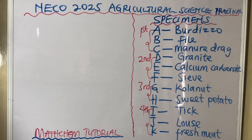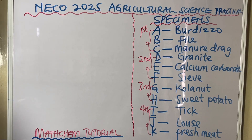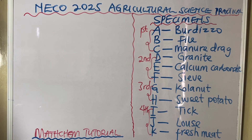Specimen B is a file. Everyone knows a file — it is used to sharpen metals such as cutlasses, knives, or any metals used on the farm.